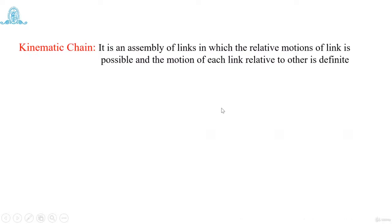Then, kinematic chain. What is a chain? A chain means a number of links connected together. It is an assembly of links in which relative motion of a link is possible and the motion of each link relative to the other is definite.